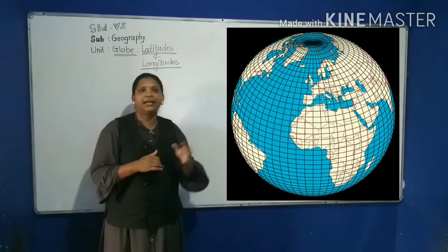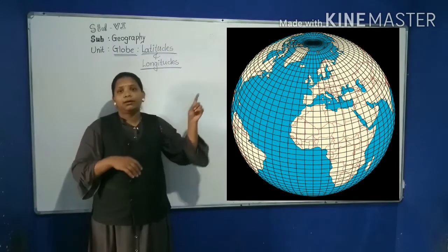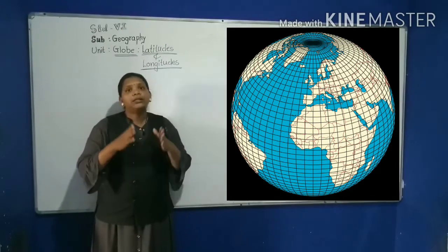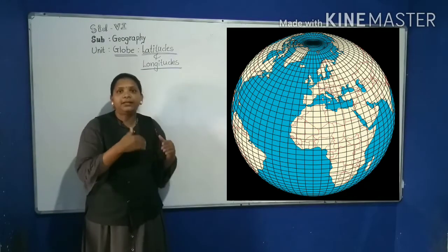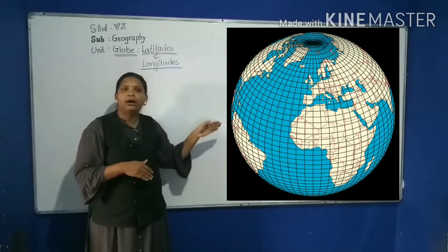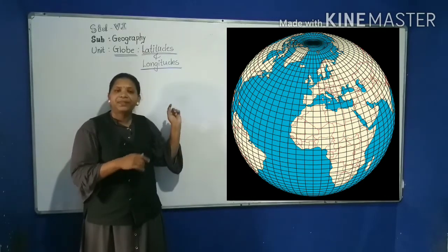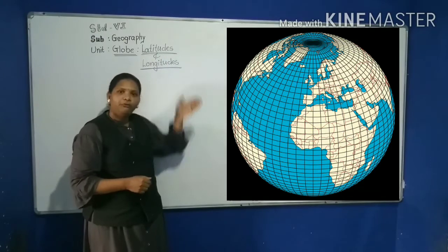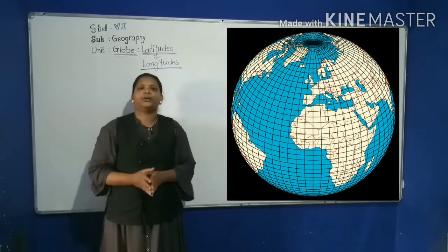These lines make a pattern called grids. The crisscrossing of lines on the globe show the pattern. They cut each other at right angles. The horizontal lines are called latitudes and vertical lines are called longitudes.